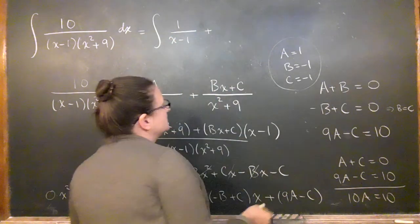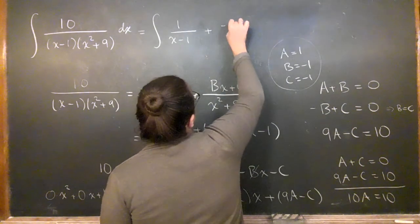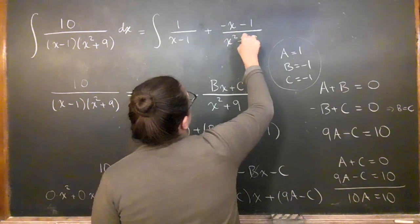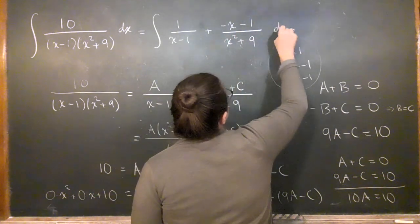Okay, plus bx plus c, so minus x minus 1 over x squared plus 9 dx.